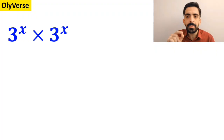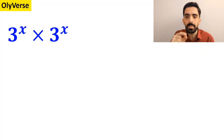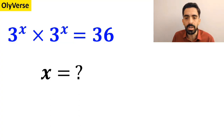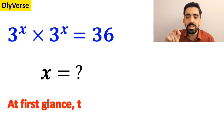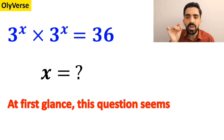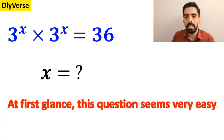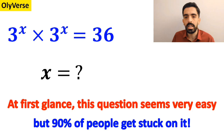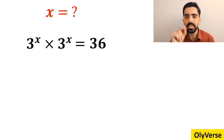If the expression 3 to the power of x times 3 to the power of x is equal to 36, then what is the simplest possible solution for x? At first glance, this question seems very easy, but 90% of people get stuck on it. Let's dive in and break it down step by step together.